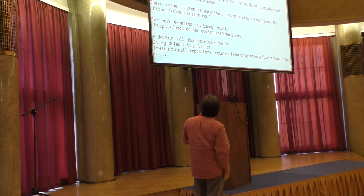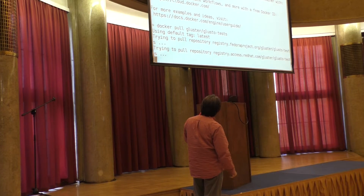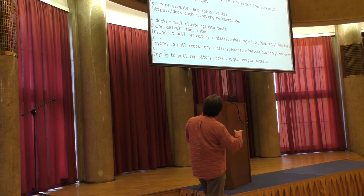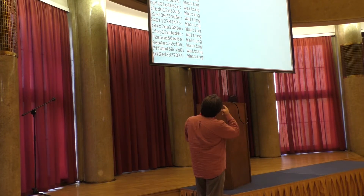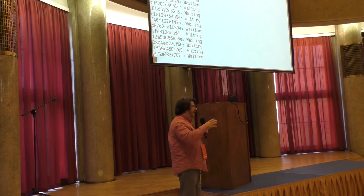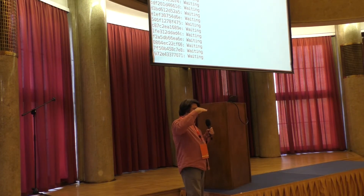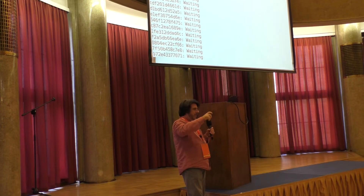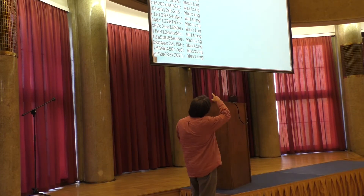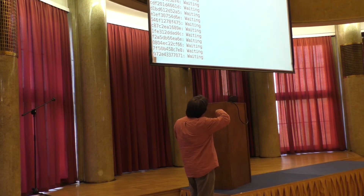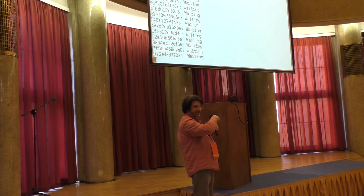Now I'm going to pull the gluster/glusto-tests Docker image. The way this is set up with Dockerfiles, each time you execute a command in the Dockerfile — something you want to do in your image as it's set up — it creates a new layer. This can be optimized; it just isn't yet. You'll see all of these different layers coming down right now.